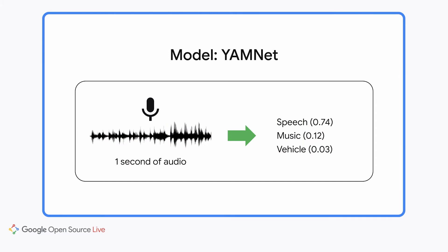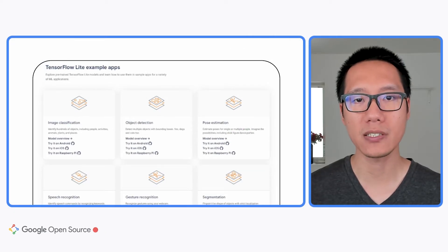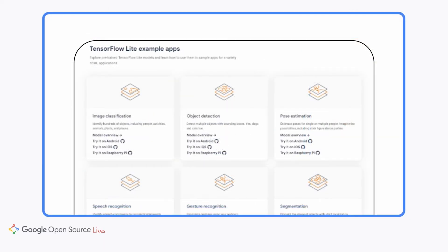There's also a pre-trained audio classification model called YAMNet, which can recognize 521 different types of sound such as music, speech, vehicle, and cat meowing. TensorFlow Lite has a collection of sample applications implementing many different on-device machine learning use cases, including object detection, audio classification, image classification, and pose estimation. There are sample apps for Android, iOS, and Raspberry Pi that you can clone from GitHub and try out.